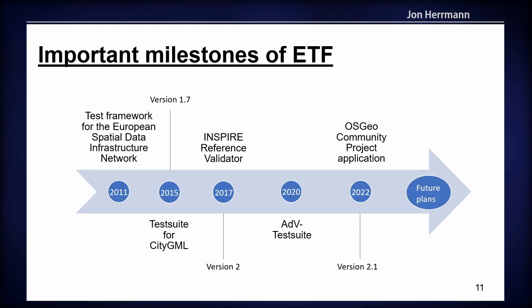We have some important milestones of ETF. In 2011, it was first used in the European Spatial Data Infrastructure Network project. In 2015, it was used in a test suite for testing GML and CityGML data. Then there was a big redesign for version 2 for the well-known INSPIRE reference validator data. In 2020, there was the ADV test suite, which brought a lot of new changes merged into version 2.1. And I'll talk about the OSGEO community project application and our future plans at the end.